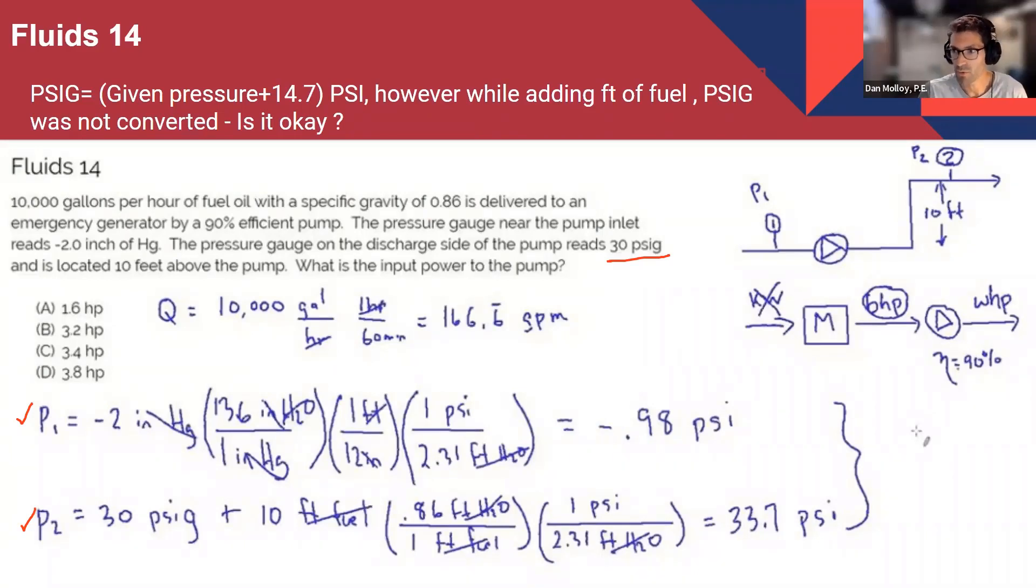Don't worry too much about the atmosphere. What we want to know is the difference in pressure across the pump. So we want to know the difference in pressure between P2 and P1. So if I have any difference in pressure, I don't have to worry about PSIG. That's what I understood.